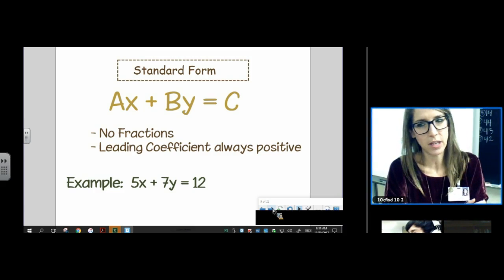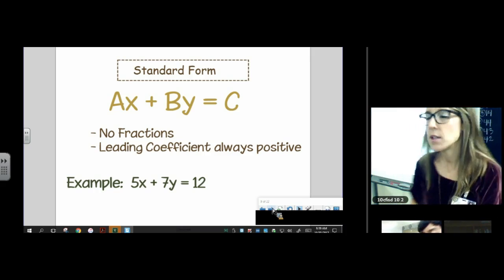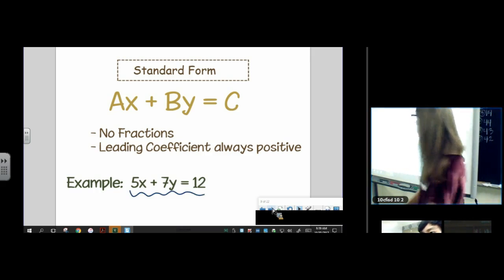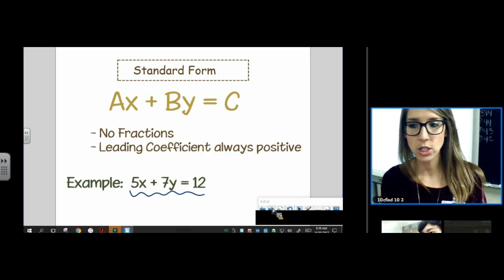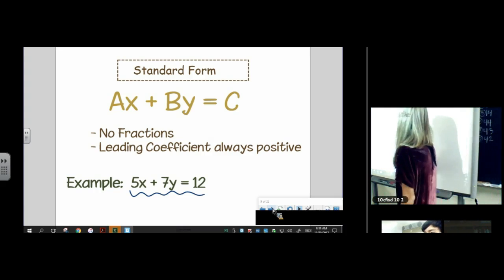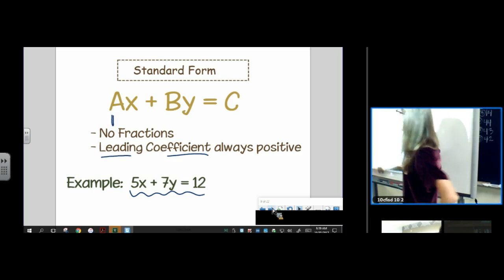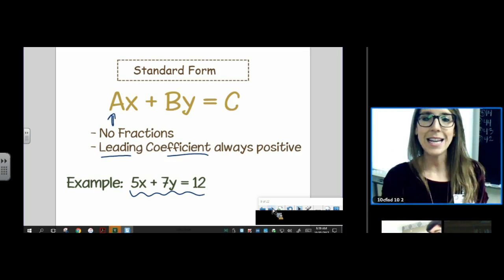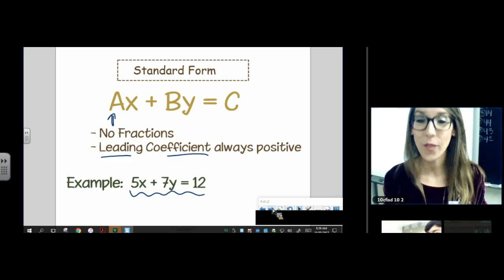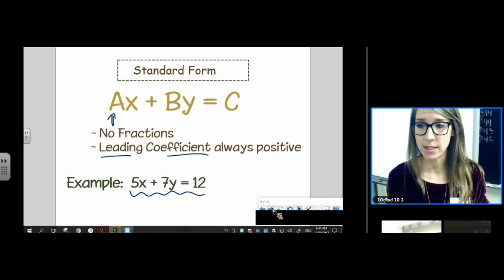You can't have any fractions and the leading coefficient has to be positive or else it's not really in standard form. So this is an example of an equation in standard form: 5x + 7y = 12. There are no fractions in my equation and the five is positive. That's what leading coefficient means. It means the number in front of the x, the one that's leading the equation. Only a has to be positive.